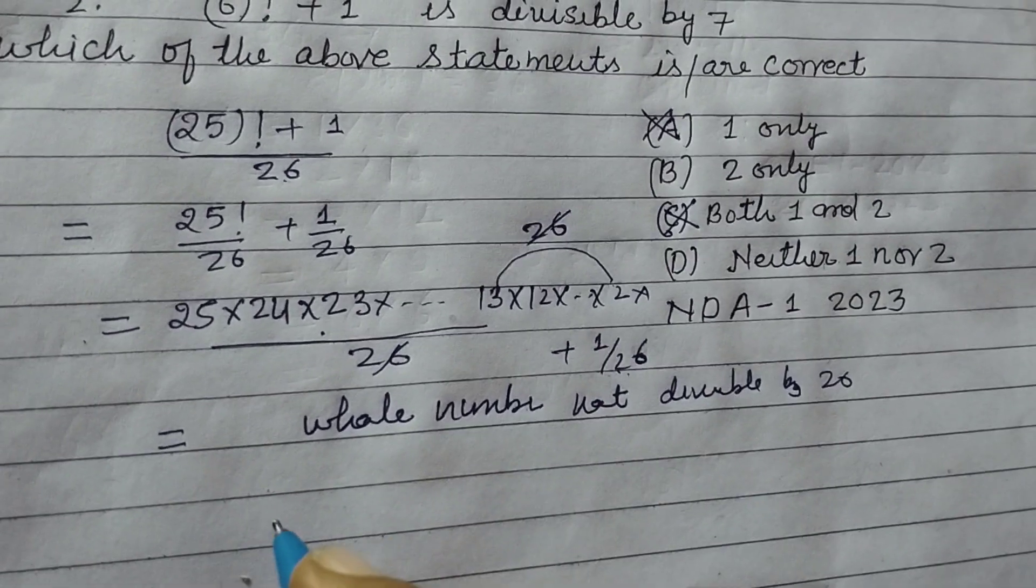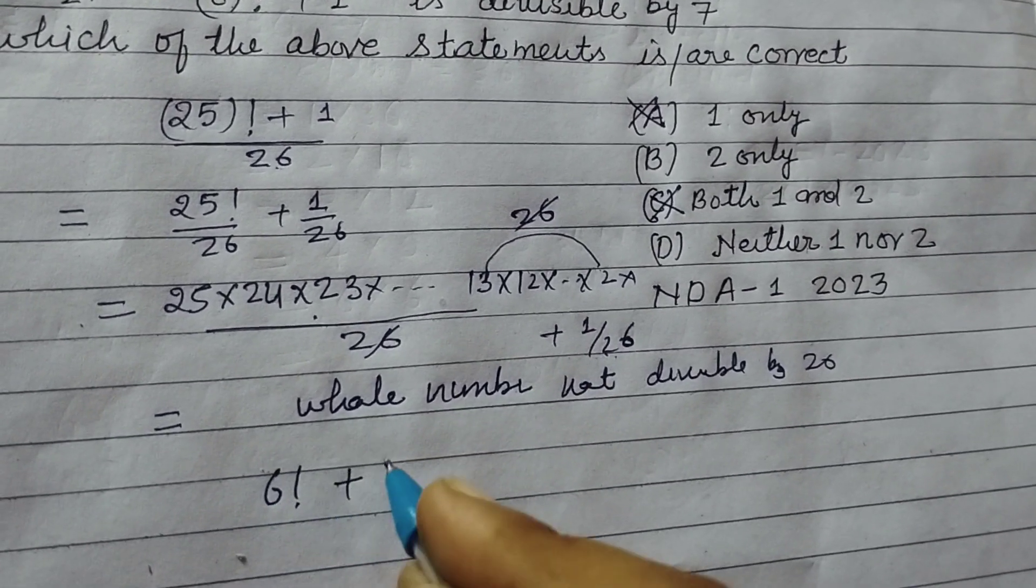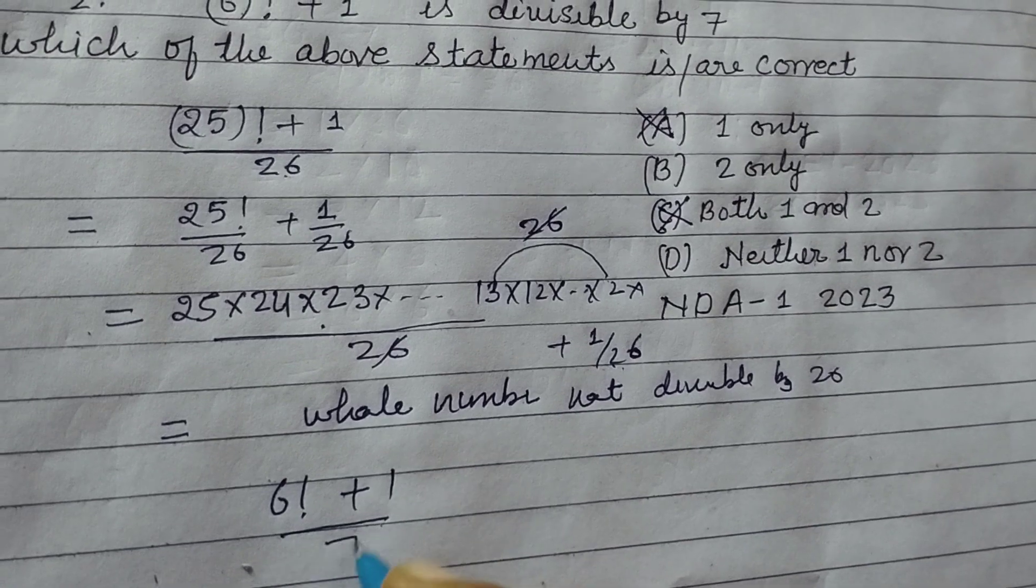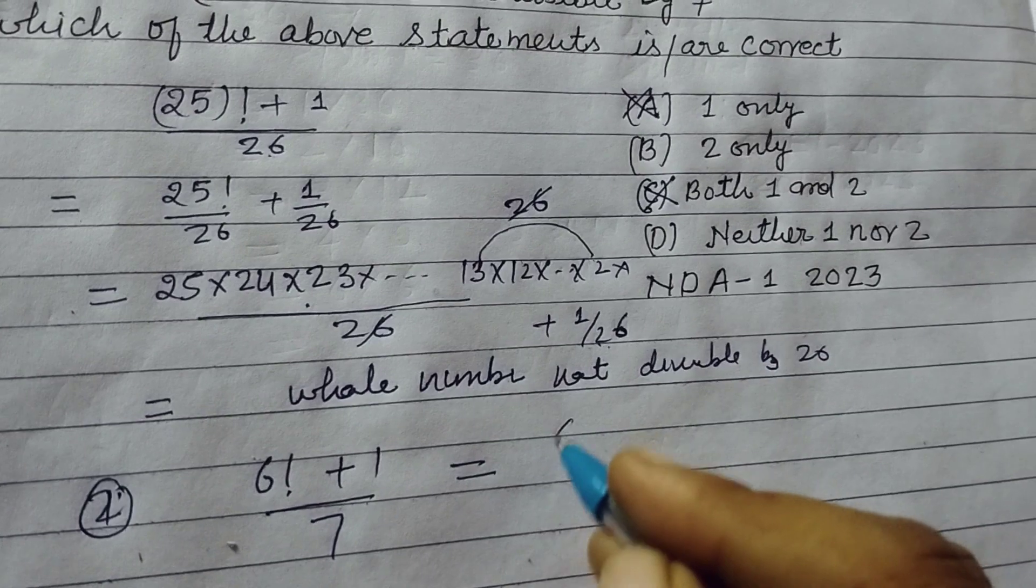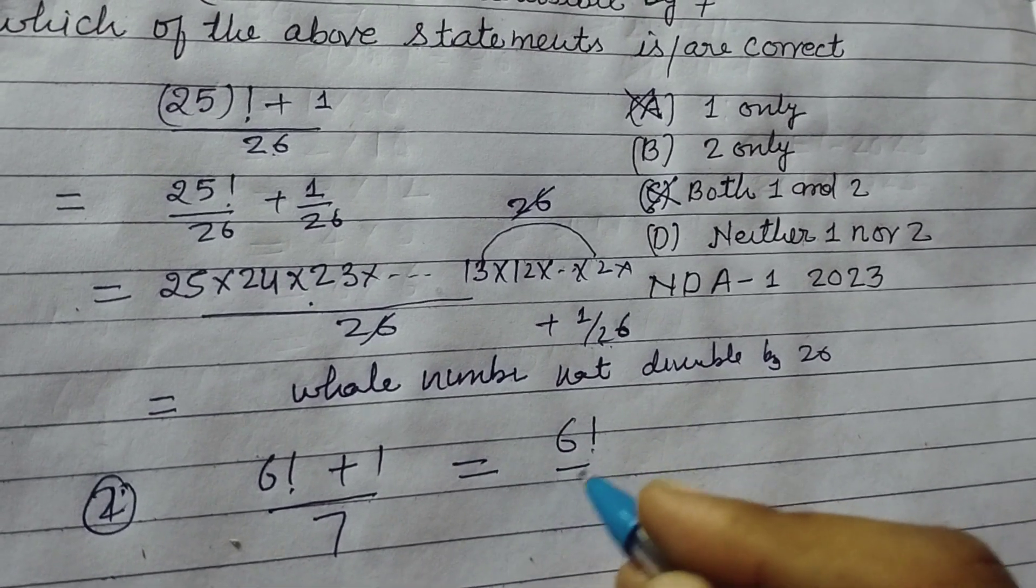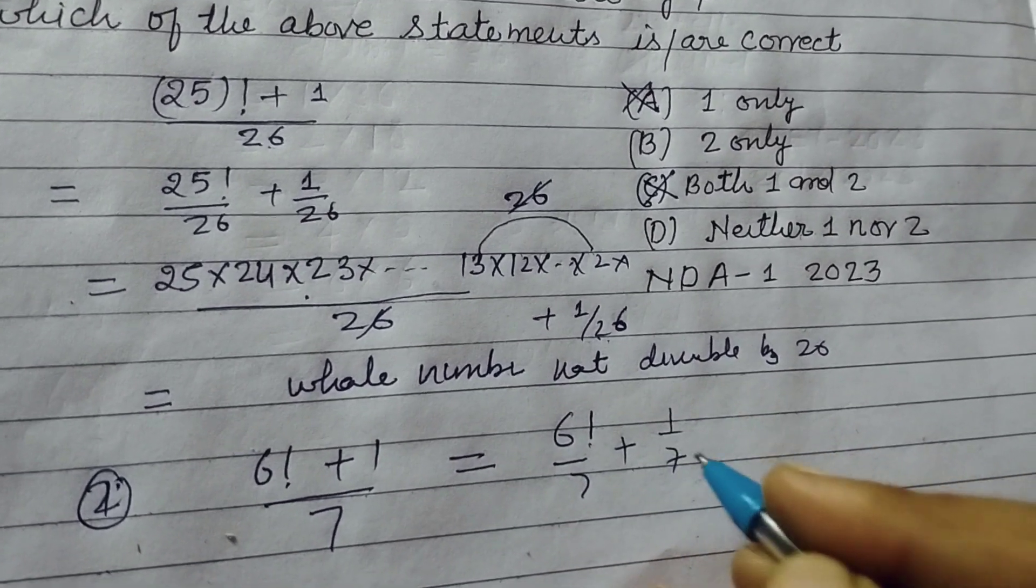Now we check second factorial 6 plus 1 is divisible by 7, this is our second statement. So we individually divide factorial 6 upon 7 plus 1 upon 7.